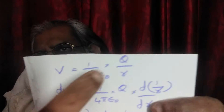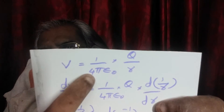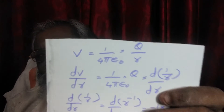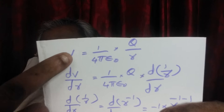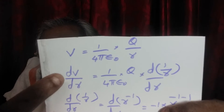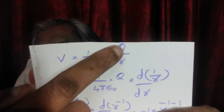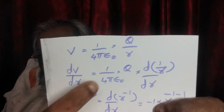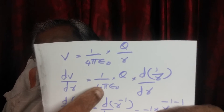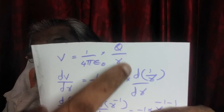Potential due to a point charge for field-creating charge Q is given by V = (1/4πε₀) × (Q/R). Let us differentiate this equation with respect to R. We get dV/dR = (1/4πε₀) × Q × d/dR of (1/R). Since (1/4πε₀) and Q are constants, we take them outside the differential.